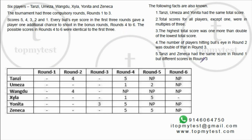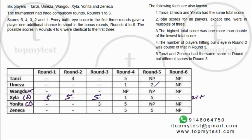Summarizing the participation data: Xyla scored three bullseyes in rounds one, two, and three — so her score is at least 21 plus her bonus rounds. Yonita hit at least one bullseye. Vangadu hit zero bullseyes. Umeza hit two bullseyes. Tanzi hit one bullseye. Zeneca hit two bullseyes.